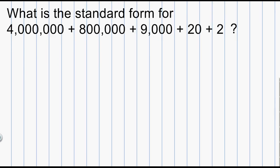Let's work one more — this time with an obviously larger number — but we'll use the same process. I'm going to write this number sentence in vertical form so I can just add it up. I'll start with my largest number, my 4 million, and again I want to make sure I keep one digit per column to keep everything straight.